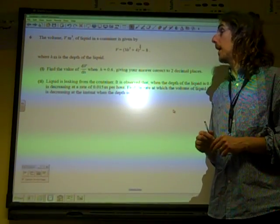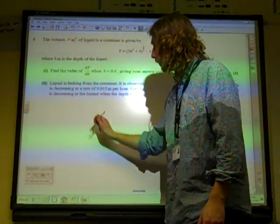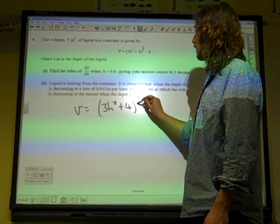Find the value of dV by dH. So this is just asking to differentiate each other. We've got V is 3x bar plus 4.